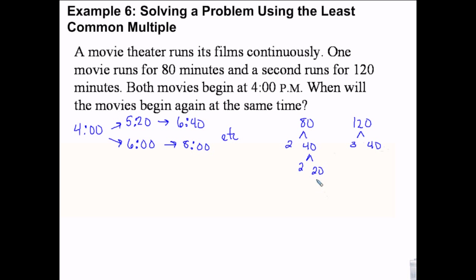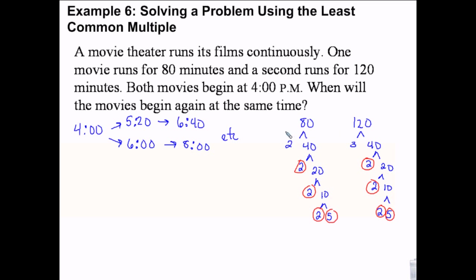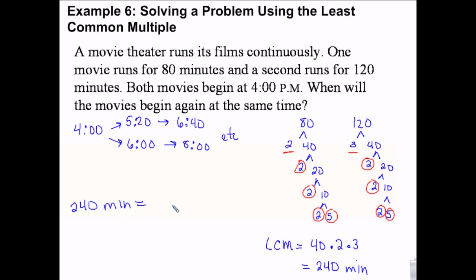Continuing the factorization: the 5s match, the 2s match three times — essentially the 40s match. Then we have a 3 and a 2 that don't match. So the LCM is 40 times 2 times 3, which equals 80 times 3, which is 240 minutes. 240 minutes is 4 hours, so if we start at 4 p.m., they'll start at the same time again at 8 p.m.